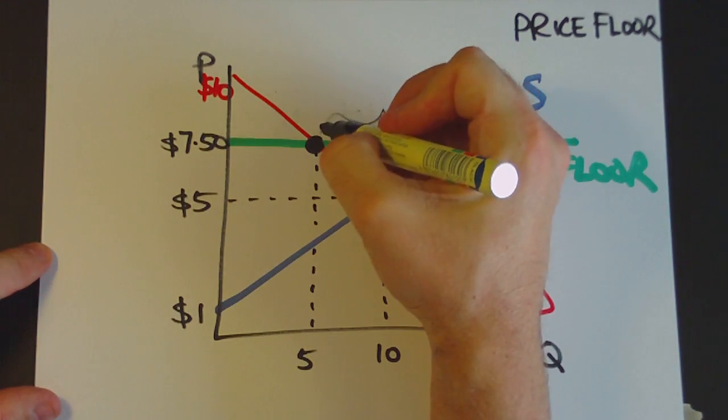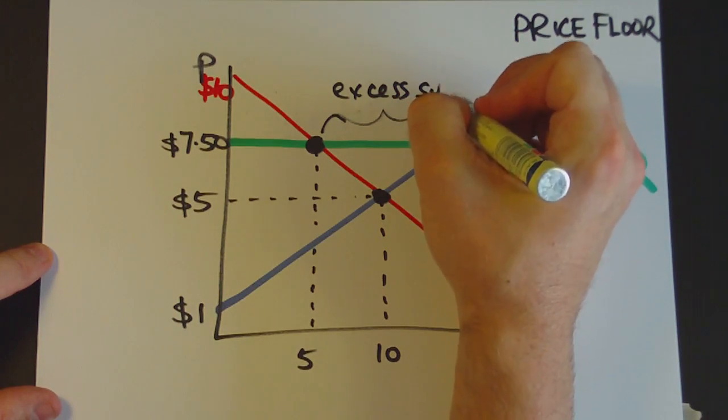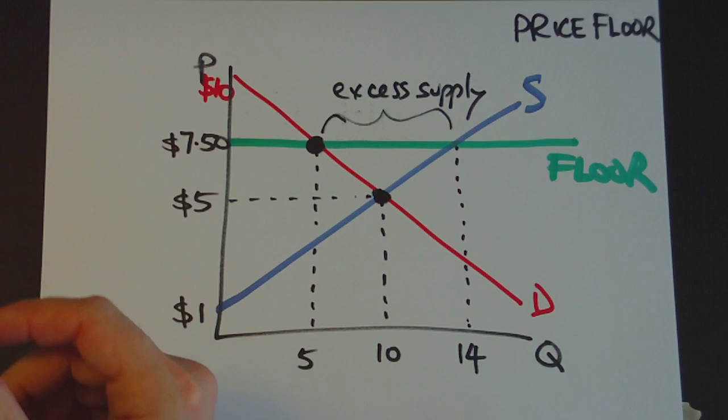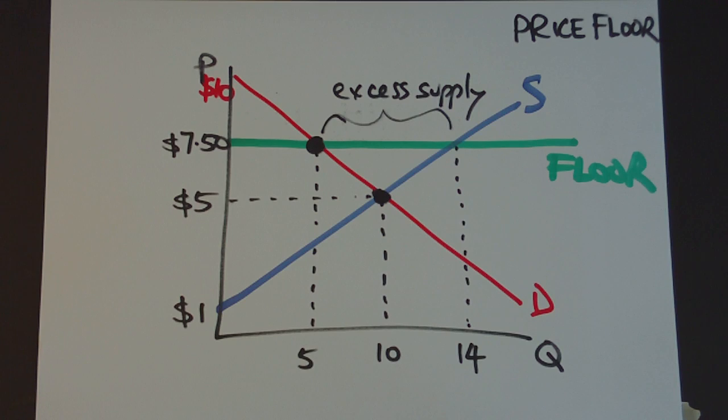So this is what's called excess supply or surplus, and that's the extra product that's either sitting on shelves or needs to be purchased by the government. Okay, so we've got that situation.